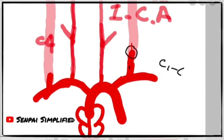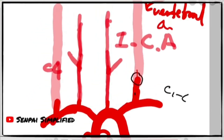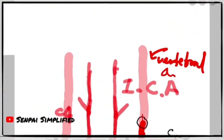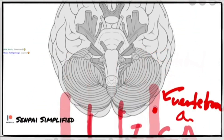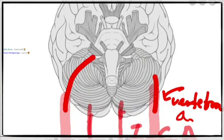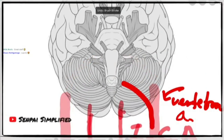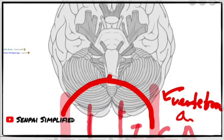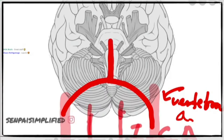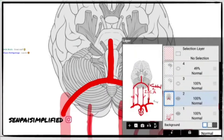Now that you know where each of these main vessels come from — from the heart, from the aorta, all the way up to the head — the vertebral arteries on each side come together to form the basilar artery. They form one common artery called the basilar artery.